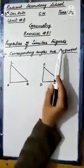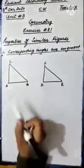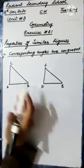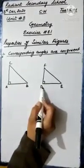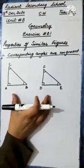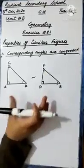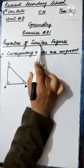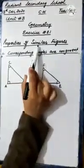Now let's discuss properties of similar figures. Property 1: if the corresponding angles are congruent, then the figures are similar. For two triangles, if angle A corresponds to angle D, angle B corresponds to angle E, and angle C corresponds to angle F, and all corresponding angles are congruent, the figures are similar. Vice versa also holds.